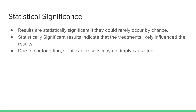An experimental result is statistically significant if the observed effect could rarely occur by chance. When the results between experimental groups are statistically significant, it is likely that the differences can be attributed to the treatments administered in the statistical test. However, significant results may imply a significant association, but do not imply causation.